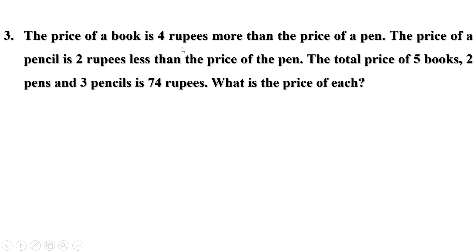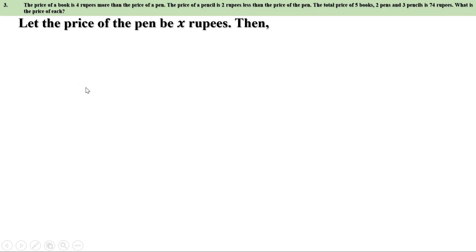Next problem. The price of a book is 4 rupees more than the price of a pen. The price of a pencil is 2 rupees less than the price of the pen. The total price of 5 books, 2 pens and 3 pencils is 74 rupees. What is the price of each? I will take the price of a pen as x, because the prices of the book and pencil are given in terms of the pen.